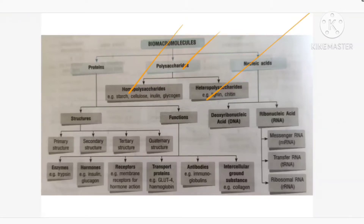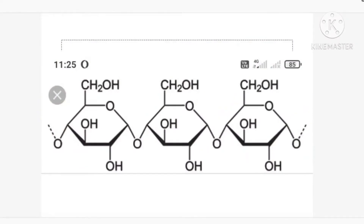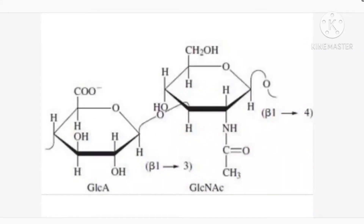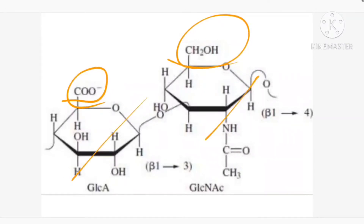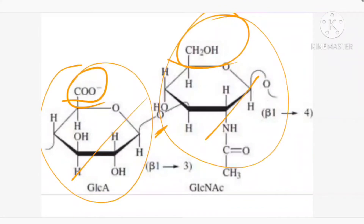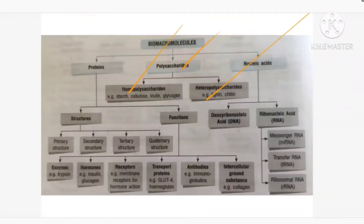Homopolysaccharides are made up of the same monomer units — same small units. Heteropolysaccharides are made up of different small units. In the picture, homopolysaccharides all have the same alcoholic group. Heteropolysaccharides have one unit with a ketone group and another with an alcohol group — they are different. So if the carbohydrate has same repeating units it is homopolysaccharide; if different repeating units, it is heteropolysaccharide.